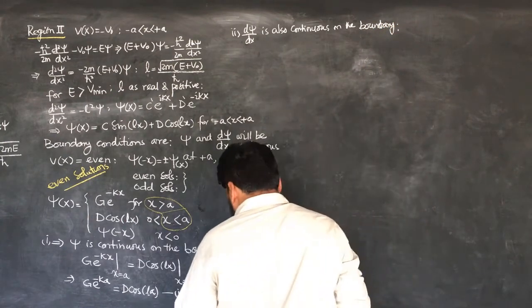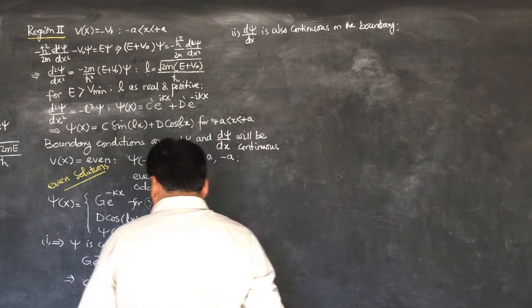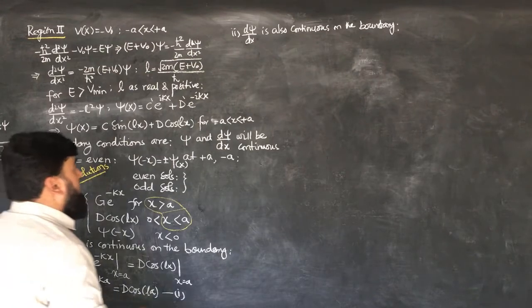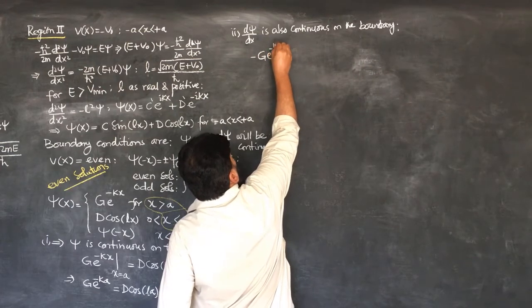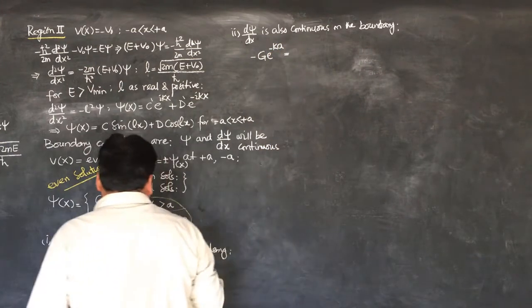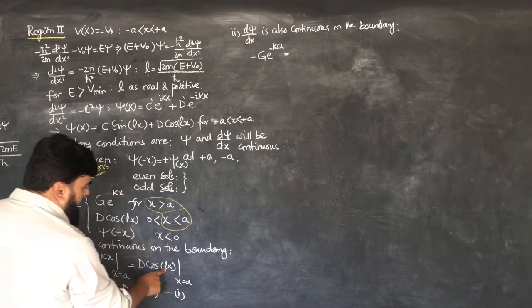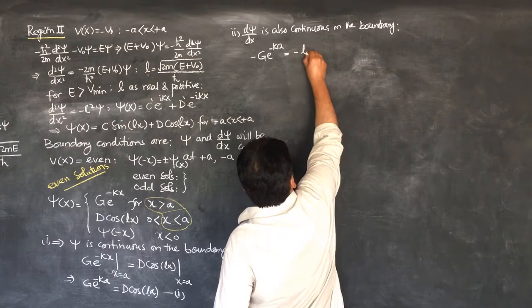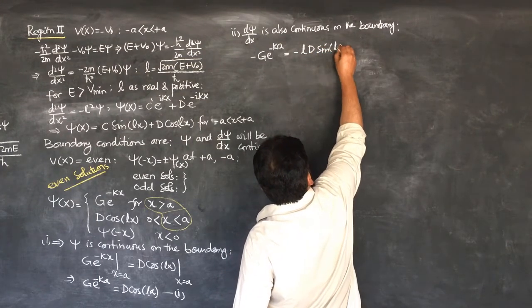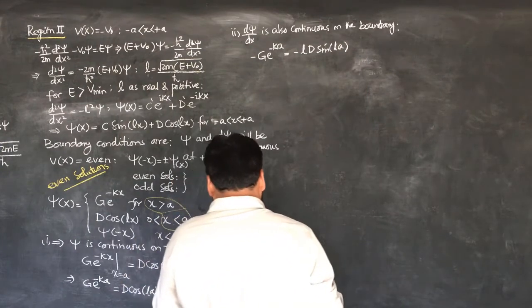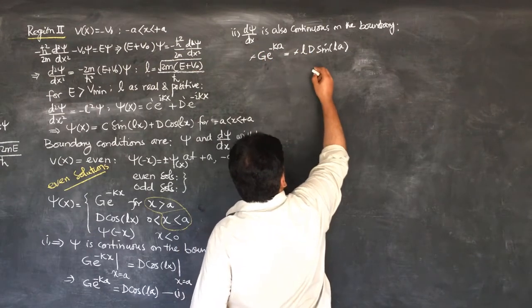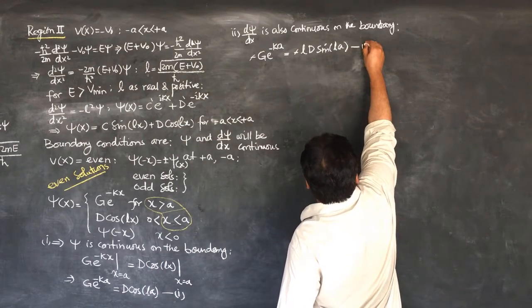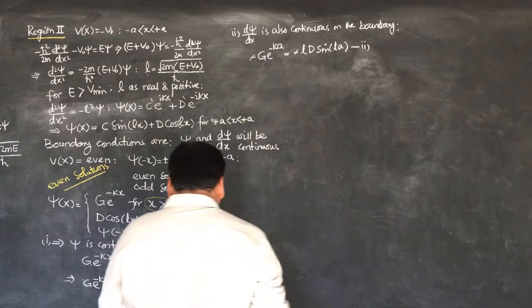The second boundary condition is that d-psi over d-X is also continuous on the boundary. Applying this, the derivative of the outer solution gives minus K G e to the power minus KA, and the derivative of the inner solution gives minus L D sin(LA). The minus signs cancel, leaving K G e to the power minus KA equals L D sin(LA). This is equation 2.